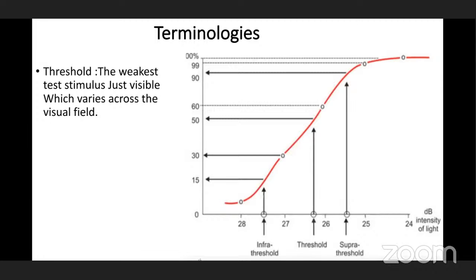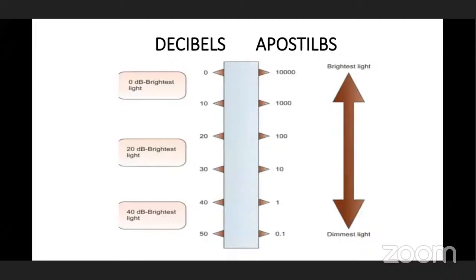Next, we have decibels and apostilbs. Decibels are a relative unit — the value used in HFA. Apostilb is the absolute unit, which is fixed and does not vary from instrument to instrument. 0 dB is the brightest light, equal to 10,000 apostilbs. 0 dB is inversely proportional to apostilb.